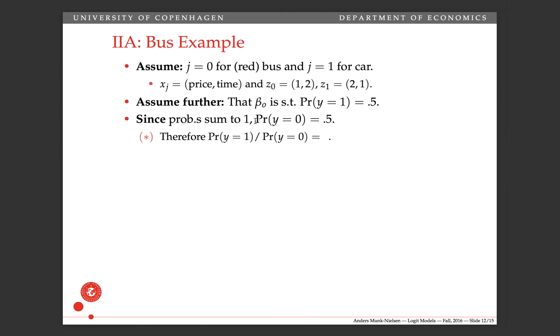Since probabilities sum to one, the probability of the other alternative, sorry, this was J equals one. So the probability of car is a half and then the probability of a bus is a half as well because they have to sum to one. Okay, so if we take one and divide by the other and it's a half divided by a half, that's just one.